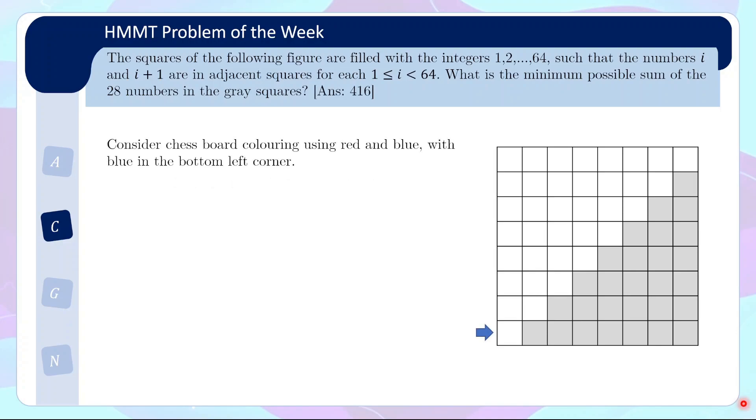Okay, how do we show that it cannot be smaller than 416? Well, in cases like this, I think one of the classic things to consider is the checkerboard coloring. So I'm going to consider a checkerboard coloring using red and blue where blue is in the bottom left corner. So alternating between blue and red. The grey part has 16 red and 12 blues on the diagonals.